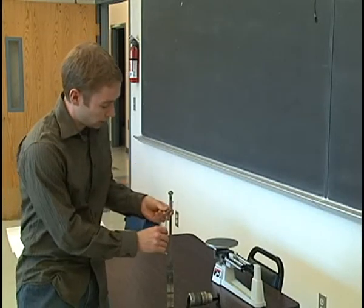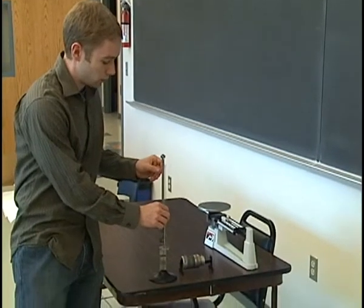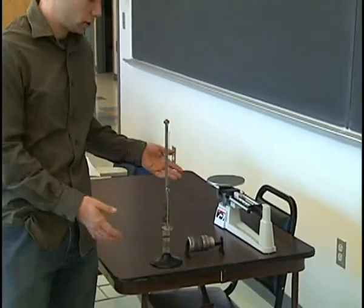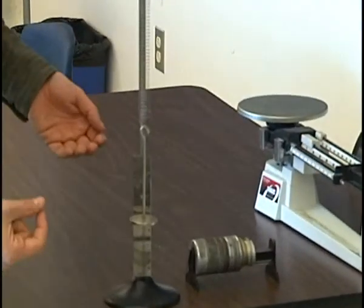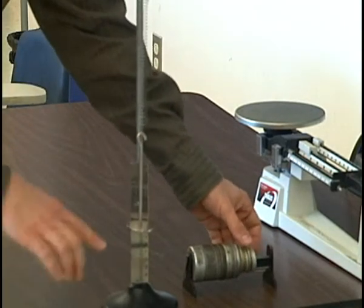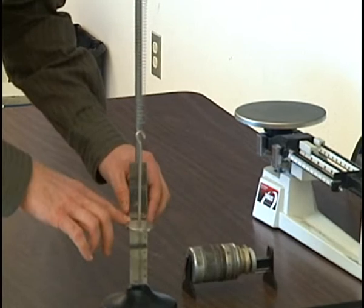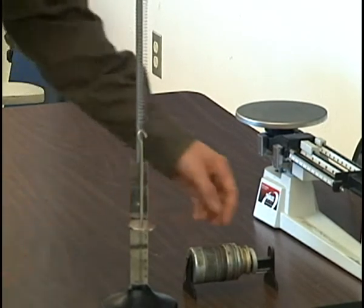Hook this guy on the other loop and let it hang naturally. So when it's here, you can see that the gravitational force, mg, is being balanced by the force from the spring, k times x. So what you need to do is measure where the rest length is right here on this ruler that comes standard on this.